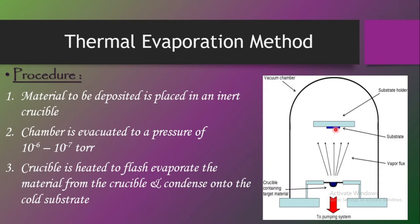This is the brief procedure of thermal evaporation method. We need an inert atmosphere, the source is heated from the crucible using different methods causing evaporation, and the vapor finally condenses over the substrate forming a thin film. That is why this physical vapor deposition process is termed the thermal evaporation method.